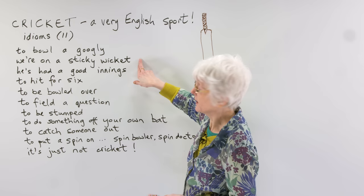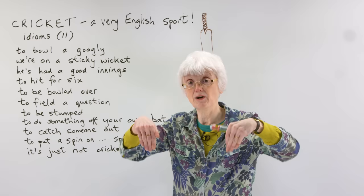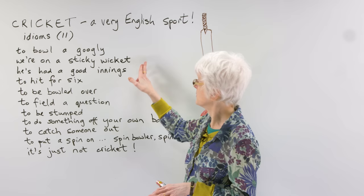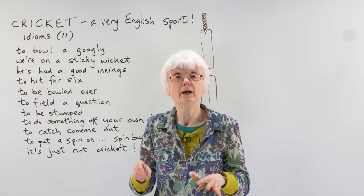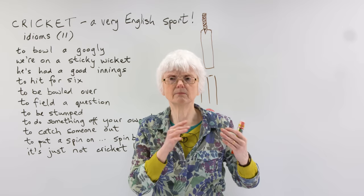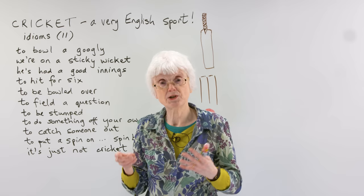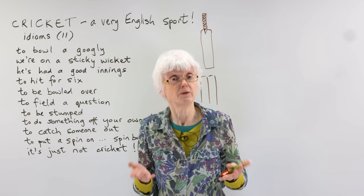If someone says "we're on a sticky wicket here" - the cricket ground is grass, so if it has been raining and the ground is wet, it can be a bit sticky and muddy. It's not a very good surface to play cricket. So if you're on a sticky wicket, it's more difficult. For example, if you're meeting someone and you can't find anything in common and you're finding it difficult to have a conversation, you could say you're on a sticky wicket with this person. In any difficult situation, you're on a sticky wicket.